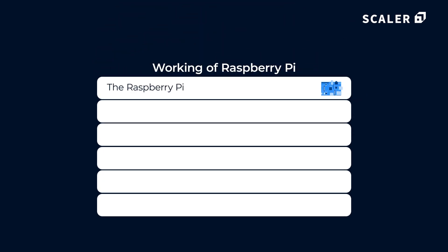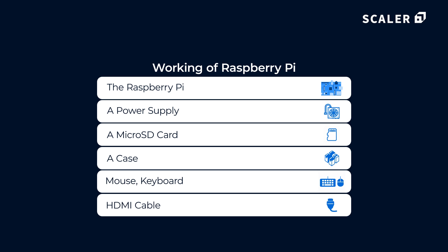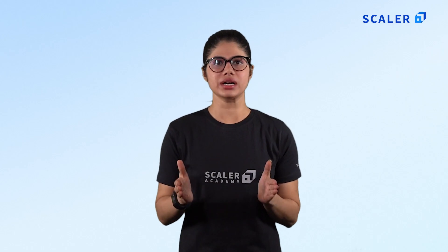Let's start by learning what you need to get started. To get started with the Raspberry Pi, there are several things to consider apart from the Pi itself. Remember, the Raspberry Pi is the heart of your project but it alone cannot manage the entire working. It needs the following elements to keep running smoothly: first, the Raspberry Pi; second, a power supply; third, a micro SD card; fourth, a case; and fifth, a mouse, keyboard, and HDMI cable.